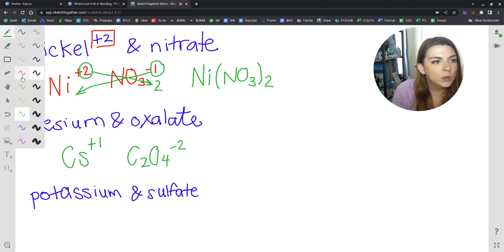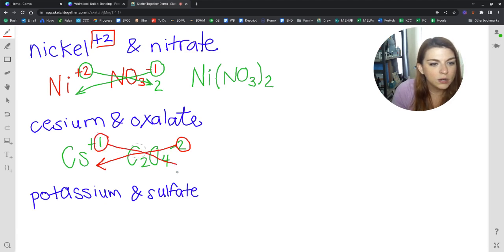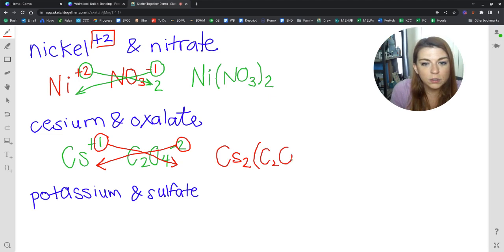So if we were to go and crisscross this, this 2 on the oxalate is going to go all the way across the bundle, leaving us with Cs2. And then this one is going to go all the way across the bundle and wind up back here. So if you are a baby chemist and you're just getting started, you may write Cs2. So two cesiums. And then because it's a poly, you would put it in parentheses. C2, this is not like a 2, O4. And then you'd plop that imaginary 1 back there.